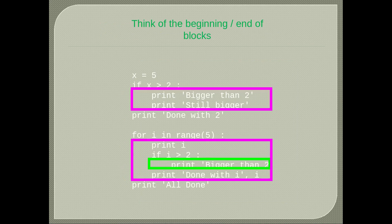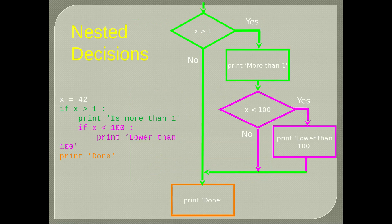Nested decisions represent conditions that can be met inside another condition — an if statement inside another if statement. For example, x = 42. If x is greater than 1, print 'is more than 1'. Then if x is less than 100, print 'lower than 100'. If either condition is not met, we print 'done'. We also print 'done' at the end if one or both conditions are true.